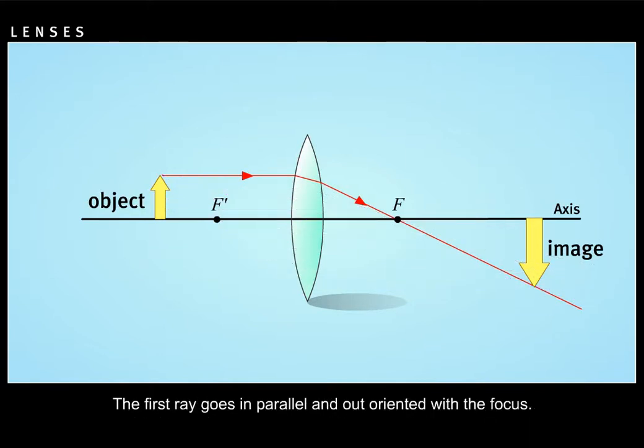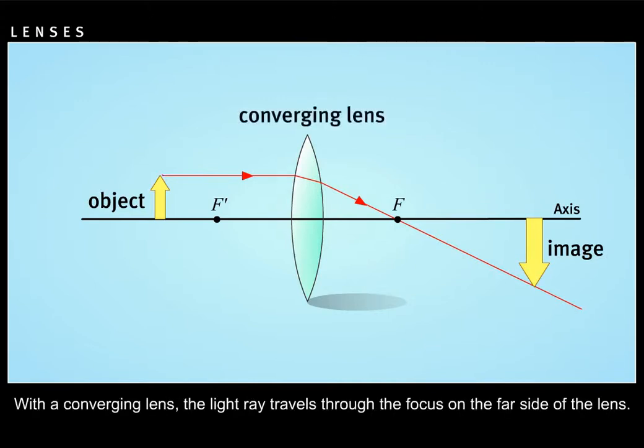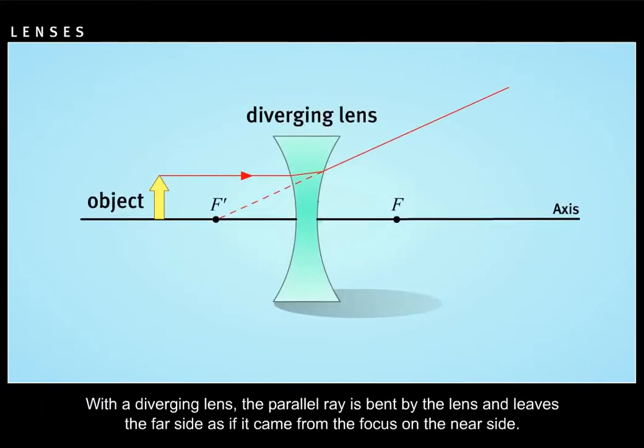The first ray goes in parallel and out oriented with the focus. With the converging lens, the light ray travels through the focus on the far side of the lens. With the diverging lens, the parallel ray is bent by the lens and leaves the far side as if it came from the focus on the near side.